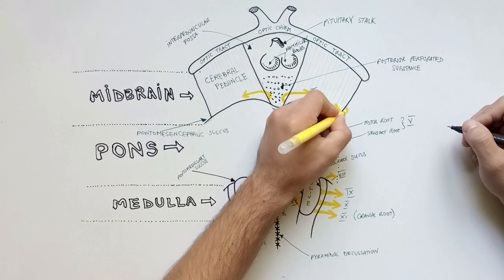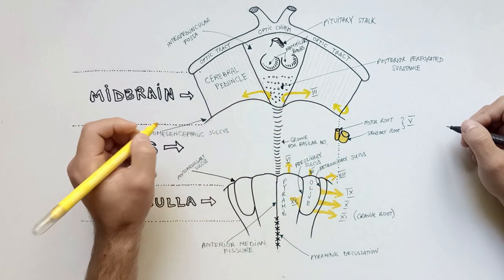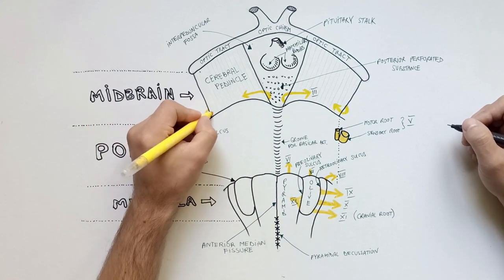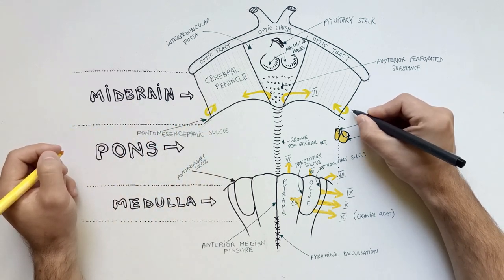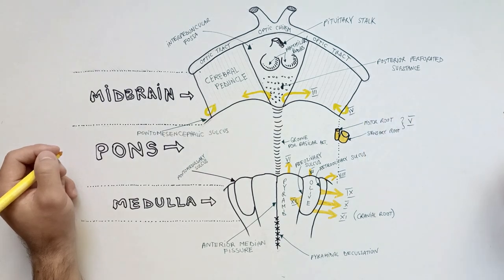On the lateral surface of the cerebral peduncles, close to the pontomesencephalic sulcus, is the trochlear nerve or the fourth cranial nerve, which is the only cranial nerve that exits the brainstem through its posterior surface.